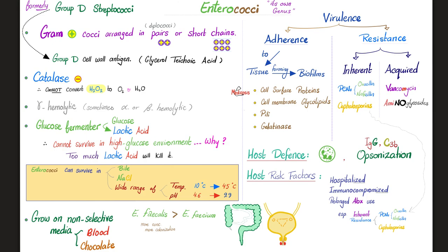Regarding antibiotic resistance: most people assume bacteria were once sensitive and became resistant due to antibiotic overuse — and while this is true in many cases, sometimes bacteria are inherently resistant. For example, Enterococci will not respond to some penicillins like oxacillin and nafcillin — these are the anti-staphylococcal penicillins, so they can kill staph but cannot kill Enterococci. The cephalosporins too will not work against Enterococci.